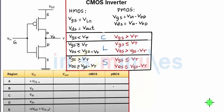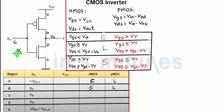In the previous clip we saw that for region A, the NMOS is in cutoff whereas the PMOS is operating in the linear region. The corresponding output for region A is high, because the input is less than the threshold voltage of the NMOS transistor — NMOS is off, PMOS is on, and the output is pulled to logic high.